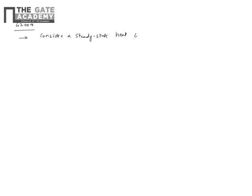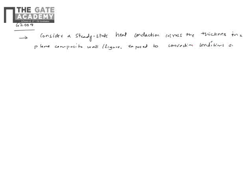Let's discuss another question from GATE 2009. Consider steady-state heat conduction — basically a composite slab is given. Writing down the question: heat conduction across the thickness in a plane composite wall, figure is given, exposed to convection conditions on both sides. Let's first draw the figure.